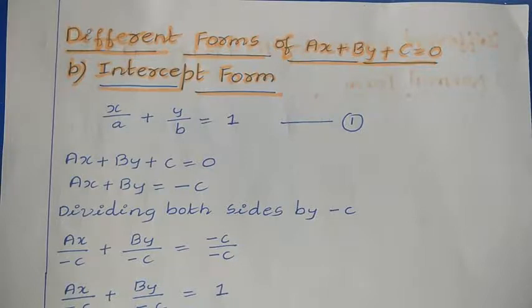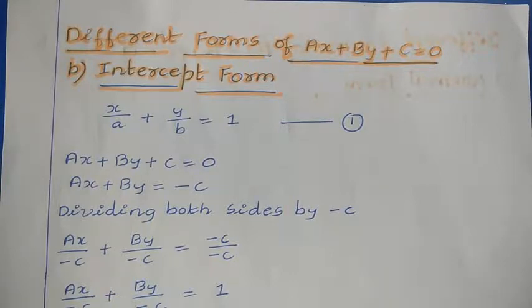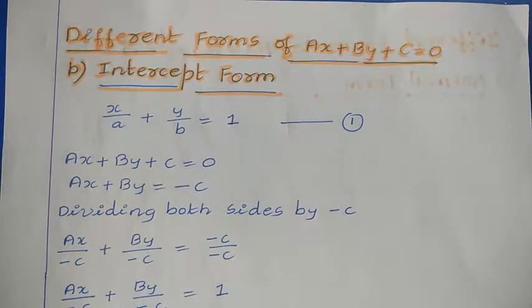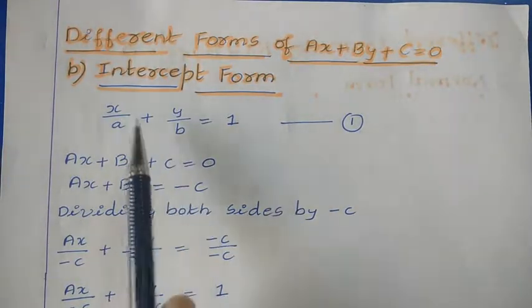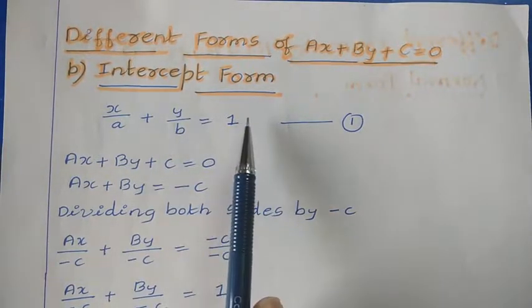In this video, I am explaining about different forms of the general equation AX plus BY plus C is equal to 0 — specifically the intercept form. Before understanding this concept, please refer to the previous videos on intercept form.